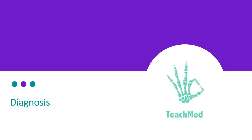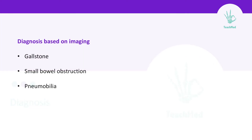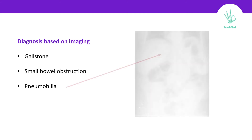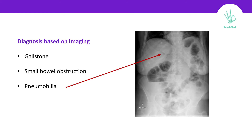Now, how can we diagnose gallstone ileus? It is based on three imaging findings: you should find the gallstone, small bowel obstruction, and pneumobilia. Pneumobilia means air in the biliary tree, like in this x-ray. These three findings are known as Rigler's triad — keep it in mind.